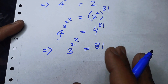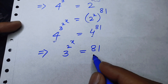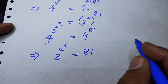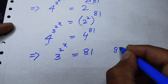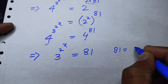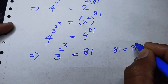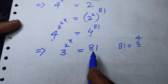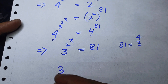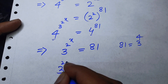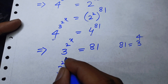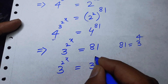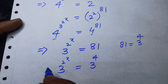We focus on 81 and write it as 3 to the power of 4. We replace 81 by 3 to the power of 4, obtaining 3 to the power of 2 to the power of x, is equal to 3 to the power of 4.